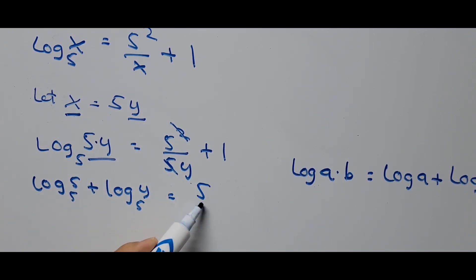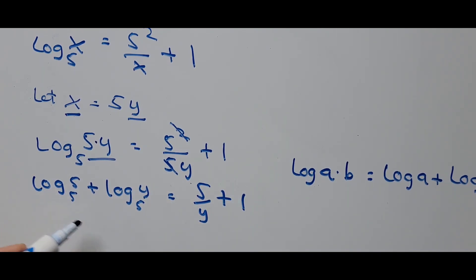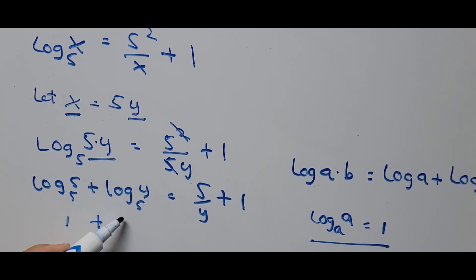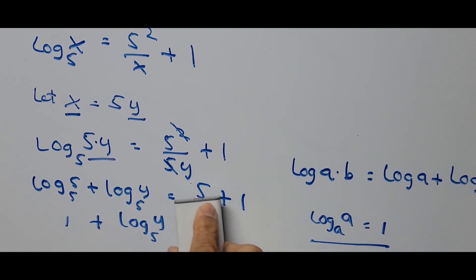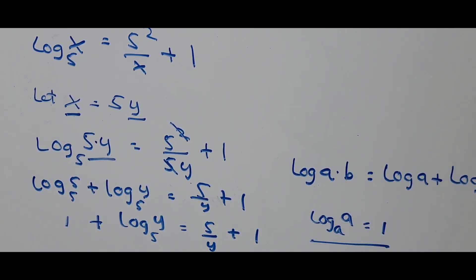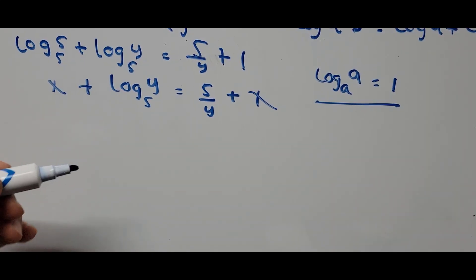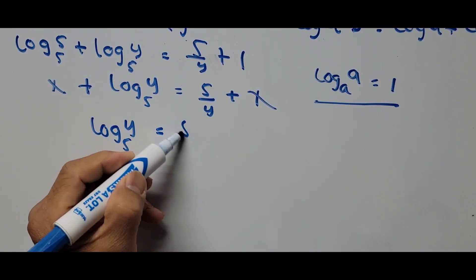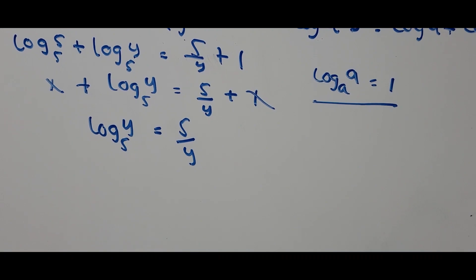Notice that log of 5 to base 5 equals 1, from the identity log of a to base a equals 1. So we have 1 plus log of y to base 5 equals 5 divided by y plus 1. Canceling the 1 from both sides, this equation now becomes log of y base 5 equals 5 divided by y.